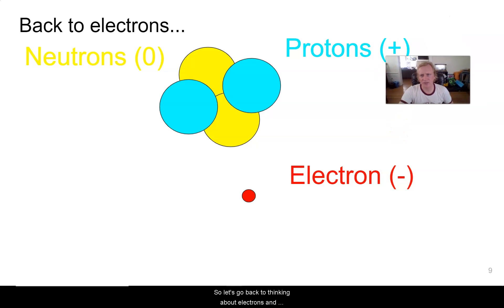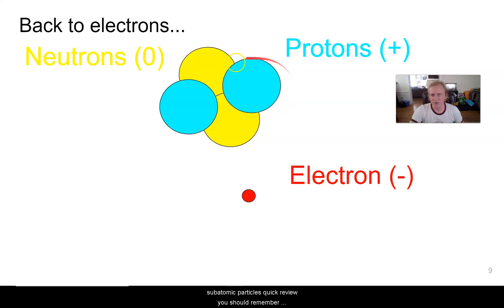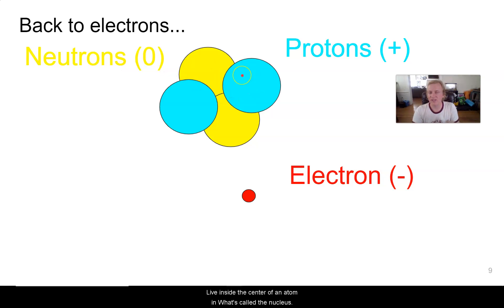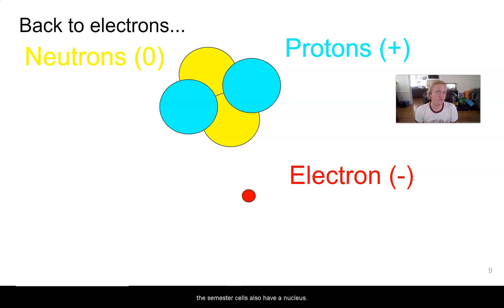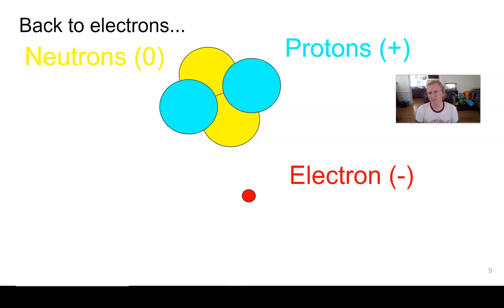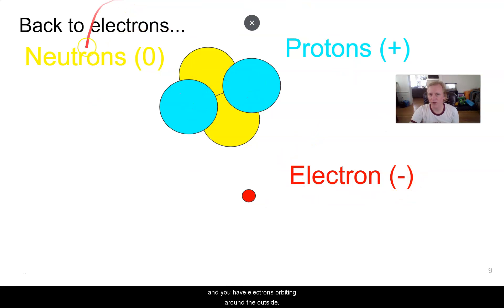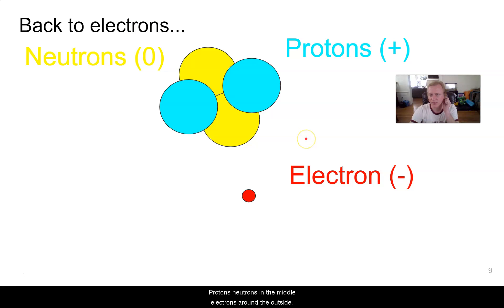Let's go back to thinking about electrons and subatomic particles. Quick review: protons have a positive charge, neutrons have a neutral charge, and both protons and neutrons live inside the center of an atom in what's called the nucleus. Cells also have a nucleus, but the nuclei of cells are very different than the nuclei of atoms. You have protons and neutrons inside the nucleus, and electrons orbiting around the outside of that nucleus.